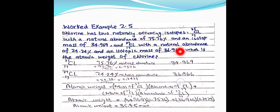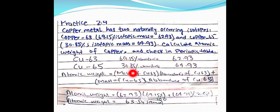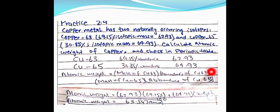For copper: using isotopes Cu-63 and Cu-65 with their respective abundances and masses, we apply the atomic weight formula — multiply each isotope mass by its fractional abundance and sum. Solving gives the atomic weight of copper as 63.547 amu.